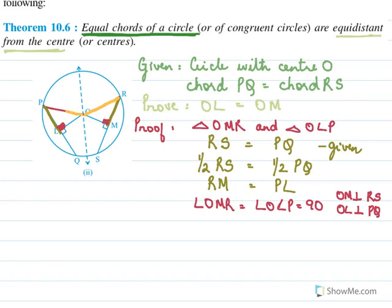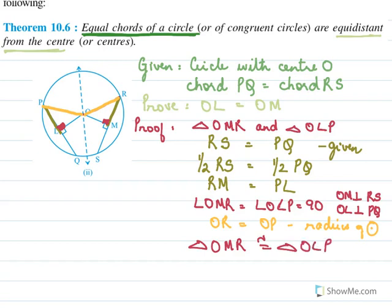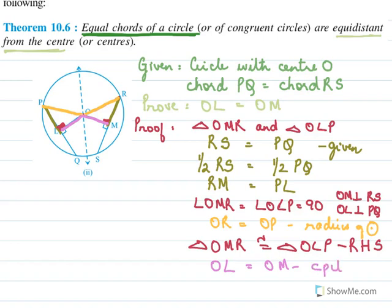OR equals OP because they are radii of the same circle. So the triangles are now congruent by RHS: triangle OMR is congruent to triangle OLP — R is the right angle, this is the hypotenuse, and this is the side. By CPCT, I can say OL equals OM.